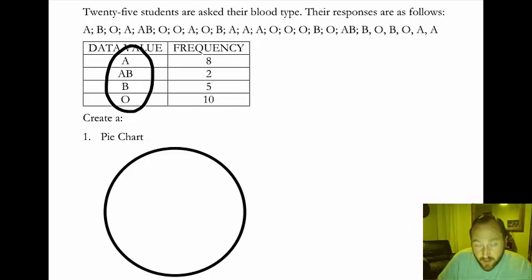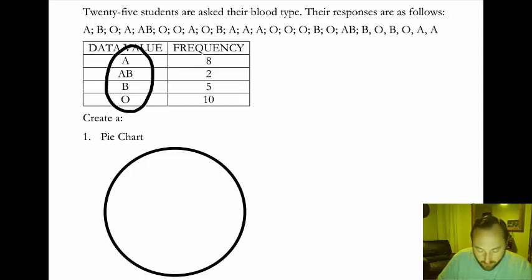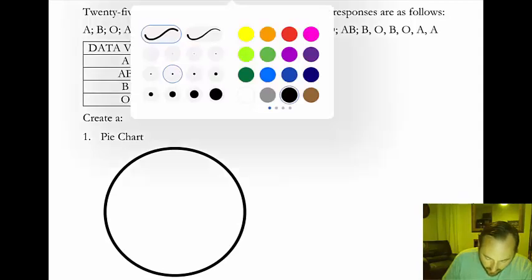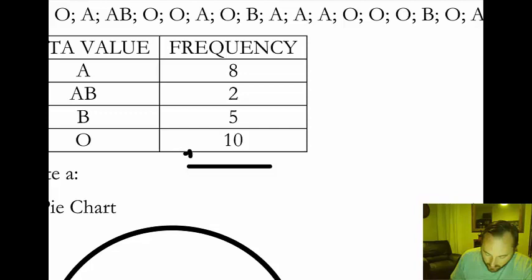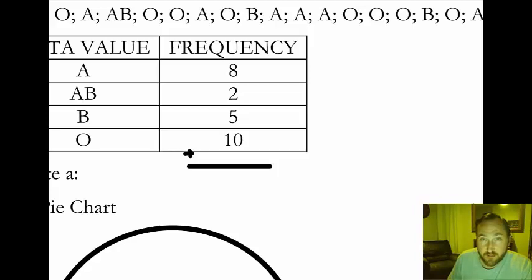Go back to one of the videos I did on Pareto charts — certainly this could be turned into a Pareto chart. However, to address the issue here, before we get to the pie chart, we're going to have to find relative frequency. So go ahead and add the frequencies together: 8 plus 2 is 10, 10 plus 5 is 15, and 15 plus 10 is 25.